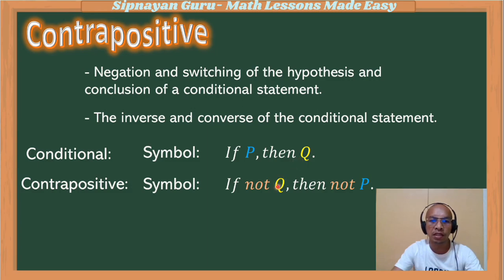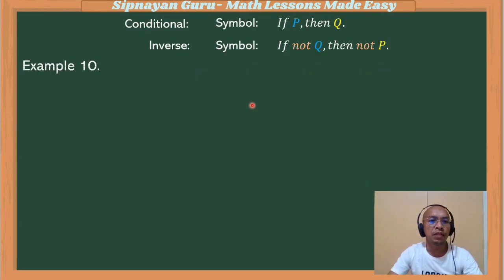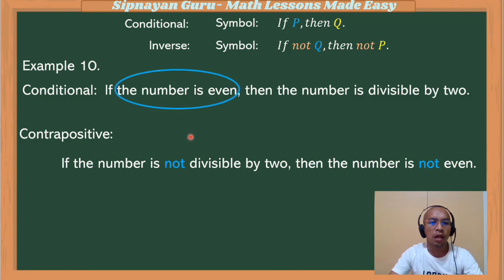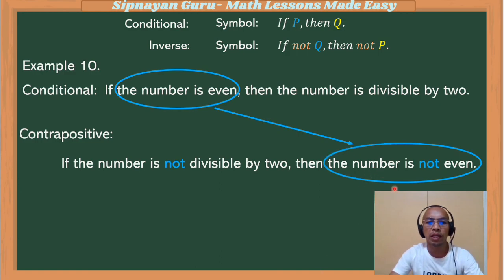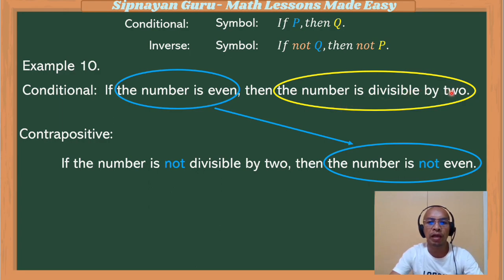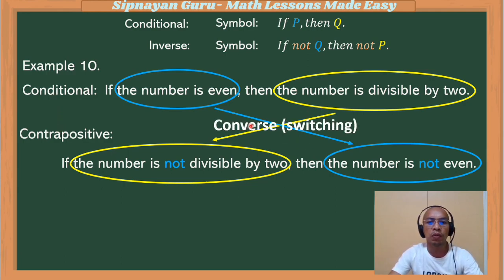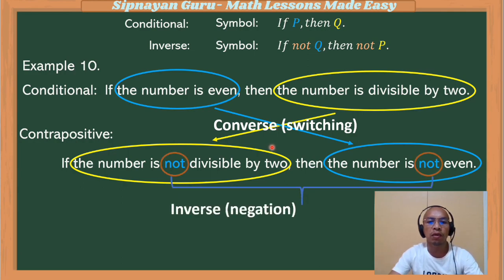Example number ten: if the number is even, then the number is divisible by 2. So its contrapositive — the number is even is our hypothesis in the conditional statement, which becomes our new conclusion in the contrapositive, but it is negated: the number is not even. The conclusion, the number is divisible by 2, becomes the new hypothesis negated: the number is not divisible by 2. So our contrapositive is: if the number is not divisible by 2, then the number is not even.